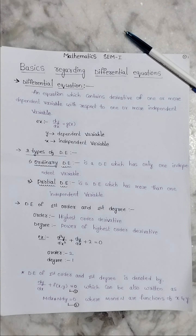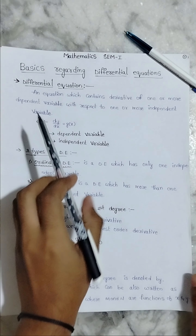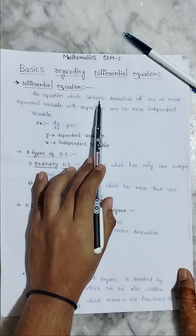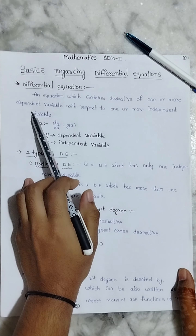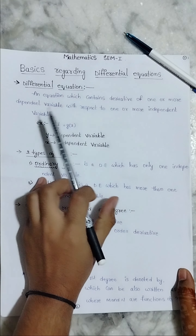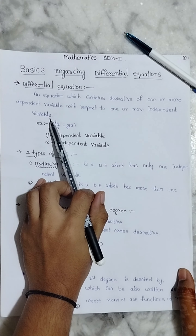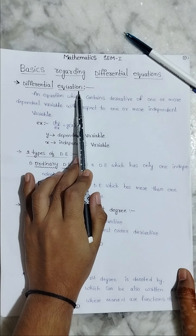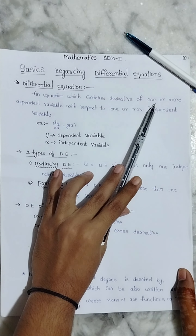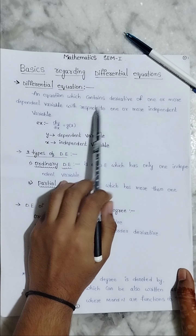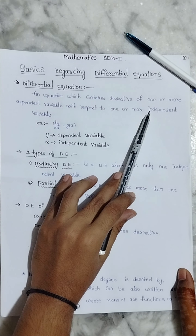What do you mean by differential equations? A differential equation is an equation which contains derivatives of one or more dependent variables with respect to one or more independent variables.